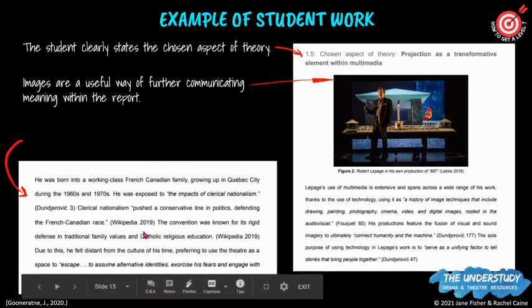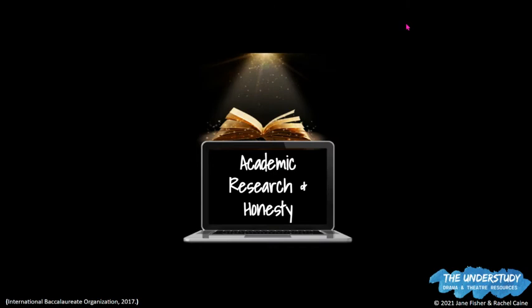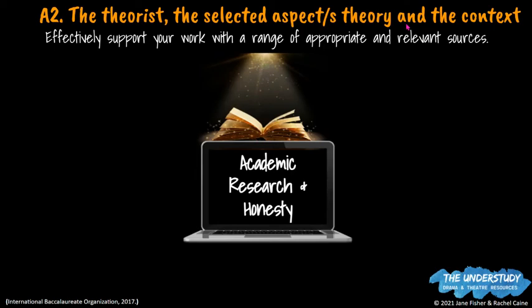Have a look at this student's snippet of the context they've written about their chosen theorist. You can see they're giving some biographical information about the particular chosen practitioner, but there's good context about the background of this person and what that person has contributed to the particular theatre style. Criterion A is really about your research and your ability to take the most significant parts and communicate the context of your theorist, and explain the theory and the aspect you've chosen.